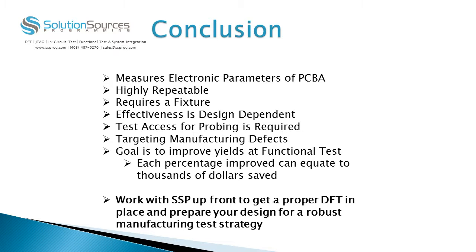In conclusion, in-circuit test measures electronic parameters of printed circuit board assemblies, it is highly repeatable, requires a fixture, and the effectiveness is design dependent. In order to maximize this effectiveness, we recommend that you run a design for testability report at the beginning of each design. Test access for probing is required, and we are primarily targeting manufacturing defects. The goal is to improve yields at functional tests. Each percentage improved can equate to thousands of dollars saved.